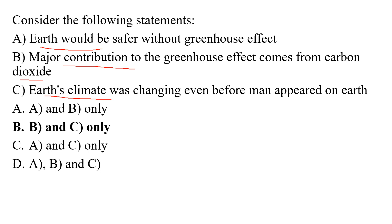Climate change is a long-term alteration in Earth's climate and weather patterns over seasons and decades, including both human and natural causes of warming. Statement one — Earth will suffer without a greenhouse effect: the greenhouse effect is the rise in Earth's temperature due to certain gases in the atmosphere such as water vapor, carbon dioxide, nitrous oxide, ozone, and methane. Most sunlight entering Earth's atmosphere is absorbed by the surface; this energy is then sent back to the atmosphere, but much of it remains trapped by greenhouse gases.